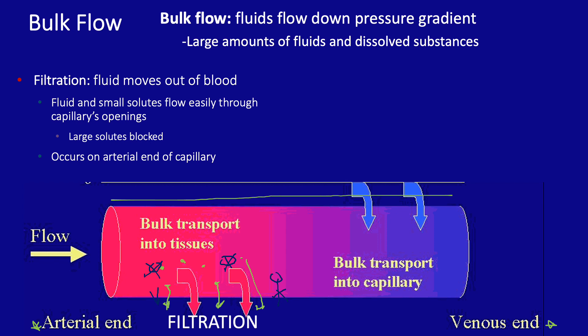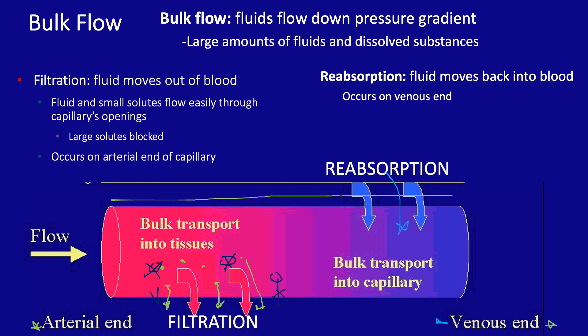On the venous end of the capillary, we have reabsorption occurring — the movement of fluid via bulk flow back into the blood. You might ask how it's possible to have filtration on one end and reabsorption on the other. This is due to hydrostatic pressure and colloid osmotic pressure, two things we'll define coming up.